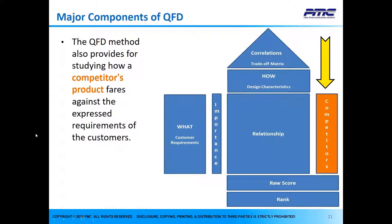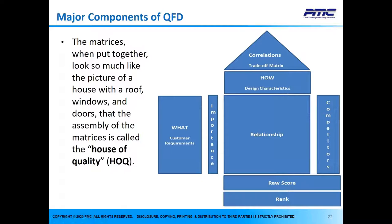The customer preference versus design feature matrix is topped by a triangular correlation matrix showing how design features relate to one another. This alerts the designer to changes that may occur in other features when modifying one. This structure also enables benchmarking — comparing features of the new product with competitors' products — to identify strengths and weaknesses. When all matrices are assembled, the result looks like a house with a roof, windows, and doors, which is why it is called the House of Quality.